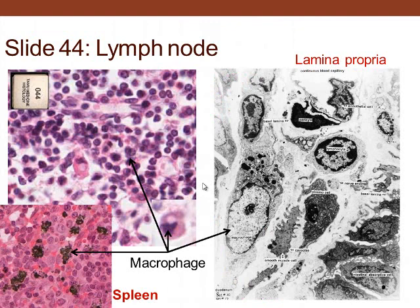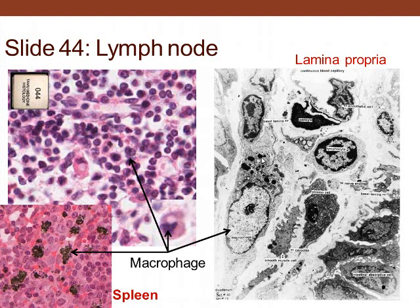In this lymphoid tissue we can see macrophages. This specimen appears to be from a spleen where the animal was injected with carbon, so carbon has accumulated in the macrophages throughout the spleen — these are the cells responsible for cleaning the blood. At the electron microscopic level, the macrophage shows a big nucleus and various components in different states of degradation that it has phagocytized.